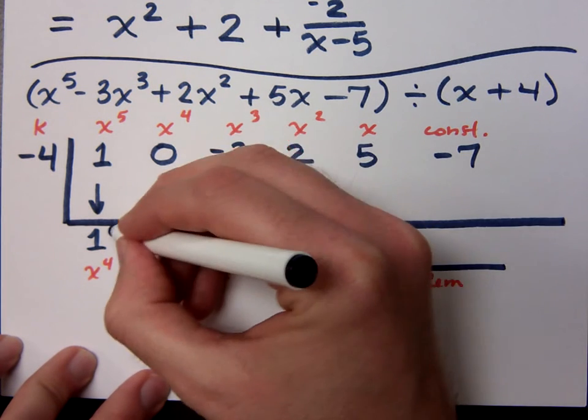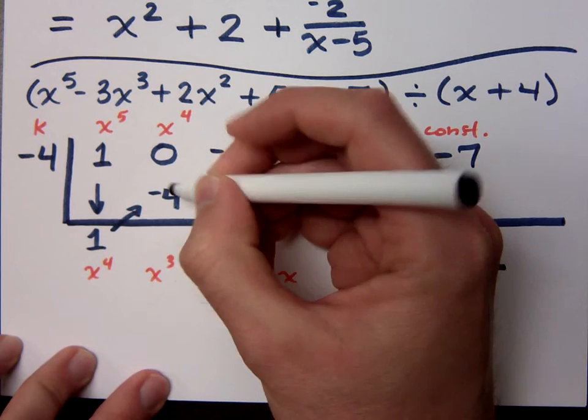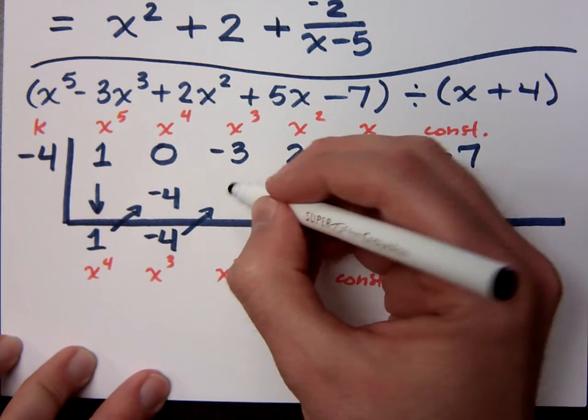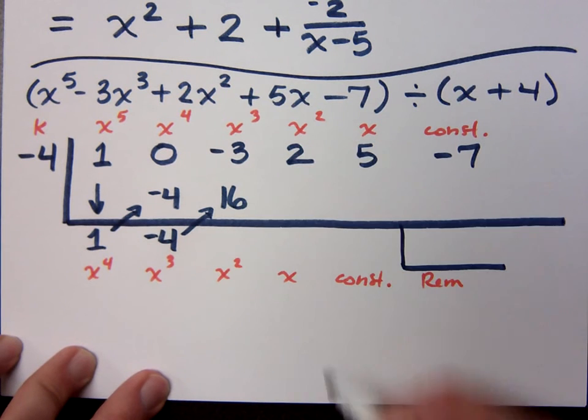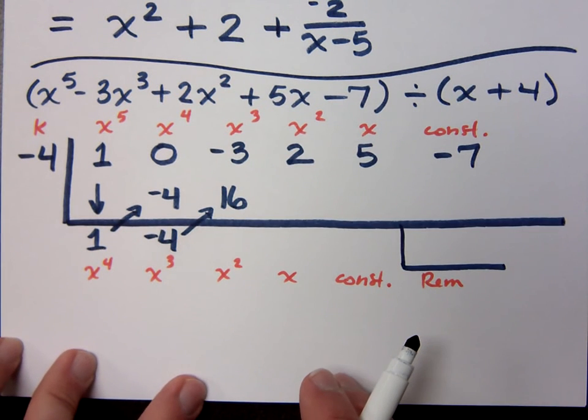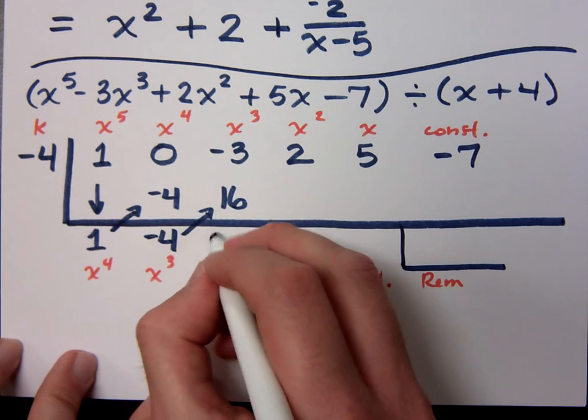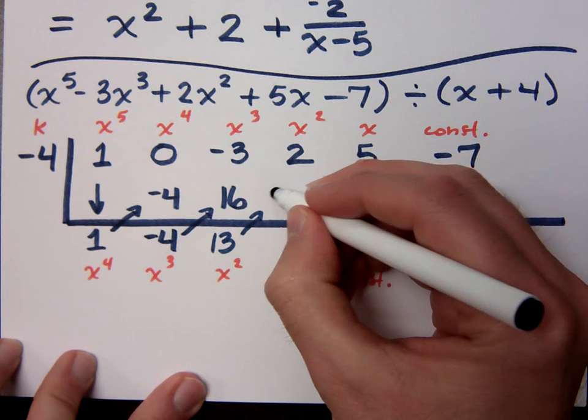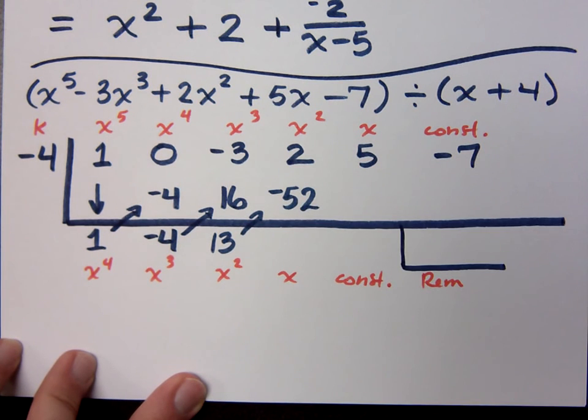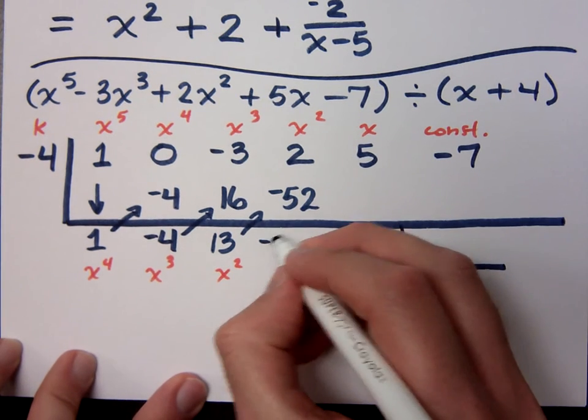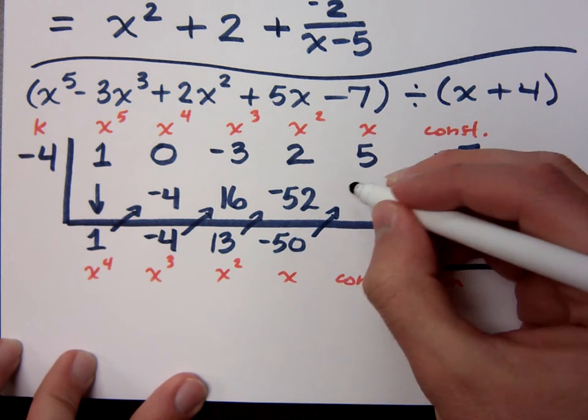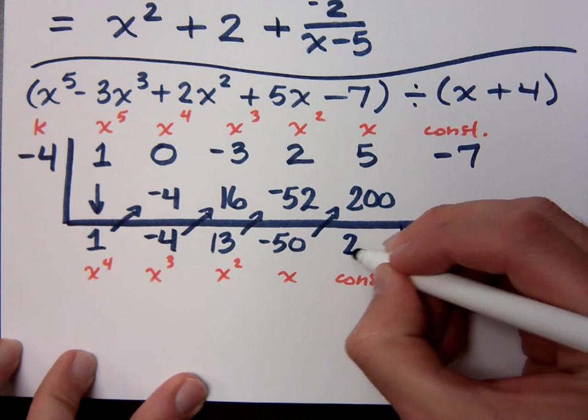Times negative 4 is? Zero minus 4. Multiply. I get 16. Negative 3 plus 16 is what? 13. Negative 4 times 13 is? Negative 52. Negative 52. 2 and negative 52 is? Negative 50.